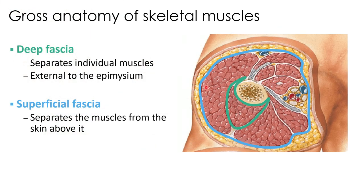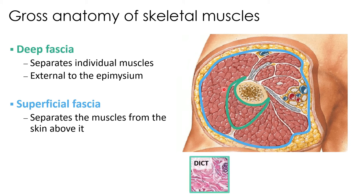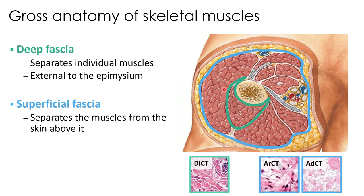The deep fascia, outlined here in green, is a layer of connective tissue that lies just external to the epimysium — an additional sheet of dense irregular connective tissue that helps to separate individual muscles and bind together muscles that have similar functions. The superficial fascia is composed of areolar and adipose connective tissue, and it separates all of the muscles from the skin above them.